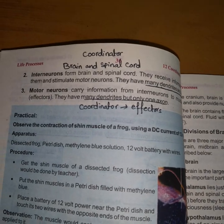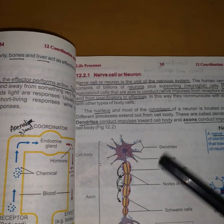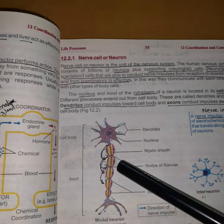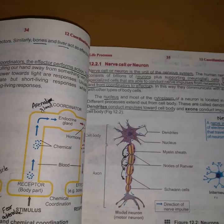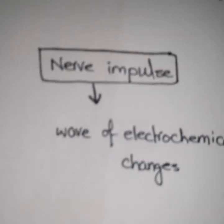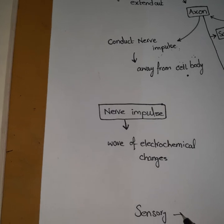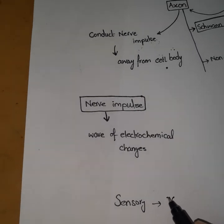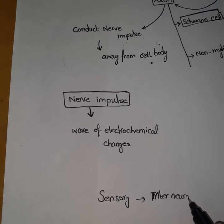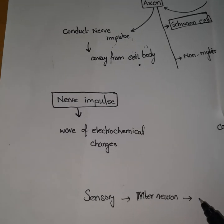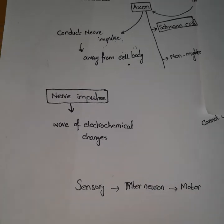The third type is the motor neuron. The motor neuron has many dendrites and one axon. It transmits the message away from the interneuron. The complete process is: first the sensory neuron receives the signal, then the message is conveyed toward the interneuron, and then the message is transmitted toward the motor neuron.